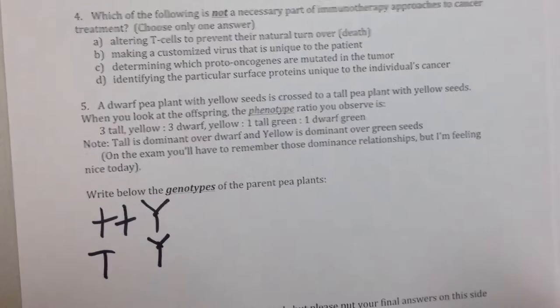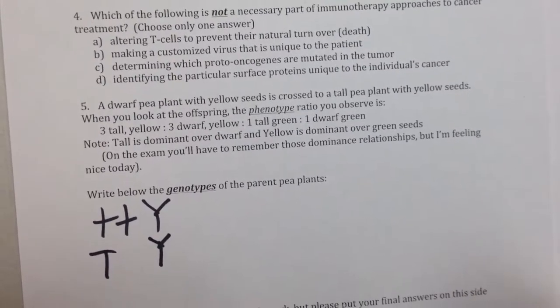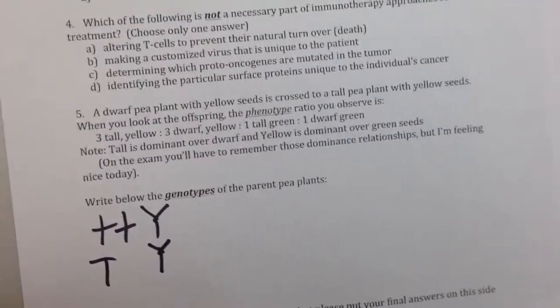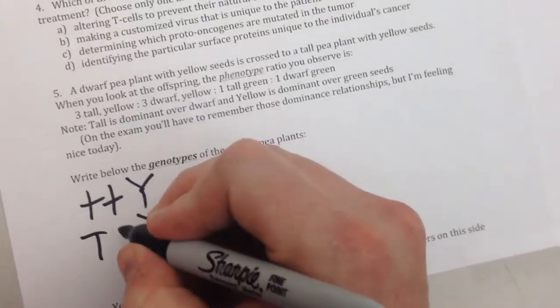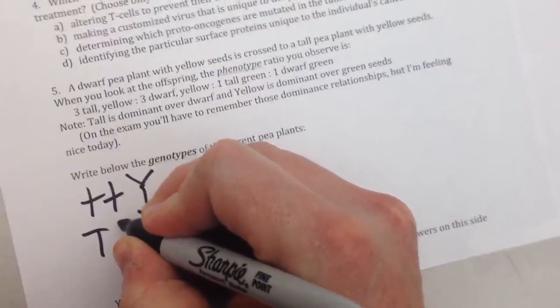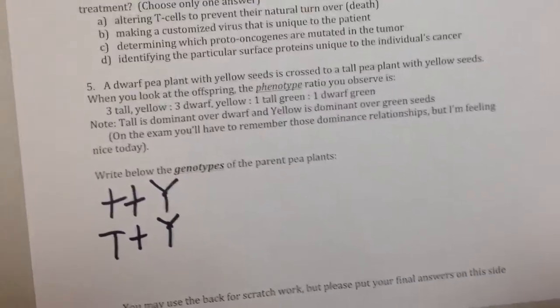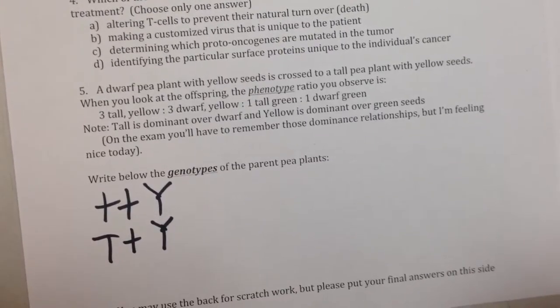Then you look at the list of offspring, and you see that some of the offspring are dwarf. The only way that some of the offspring can be dwarf is if at least one dwarf allele is running around in the second pea plant. Because if it were big T, big T, there's no way any of the offspring could possibly be dwarf.